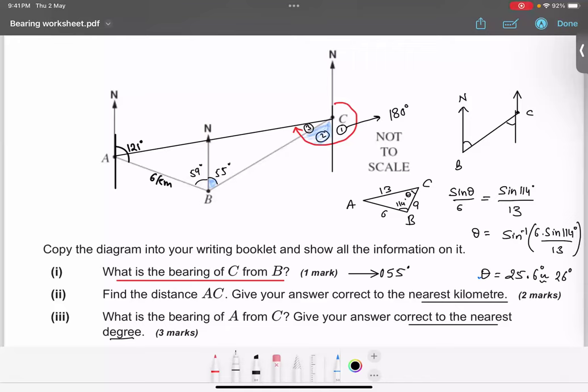So bearing is, this particular question, bearing of A from C would be 1 plus 2 plus 3. 1 is 180 degrees, and the second one was 55 degrees, and the third one we just calculated as 26 degrees. So the answer is 261 degrees.